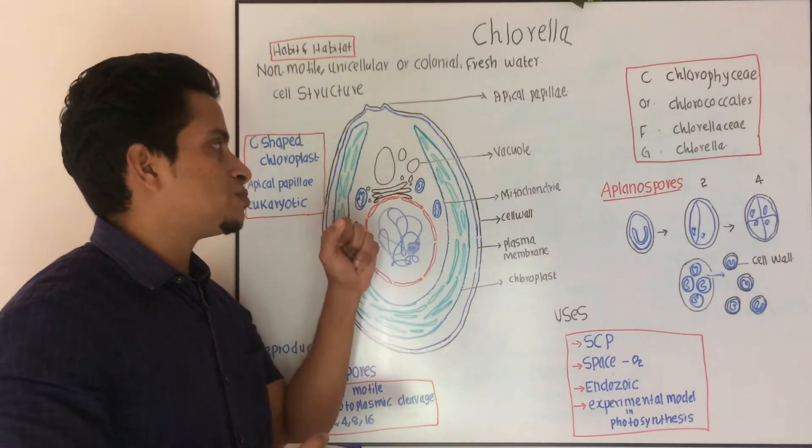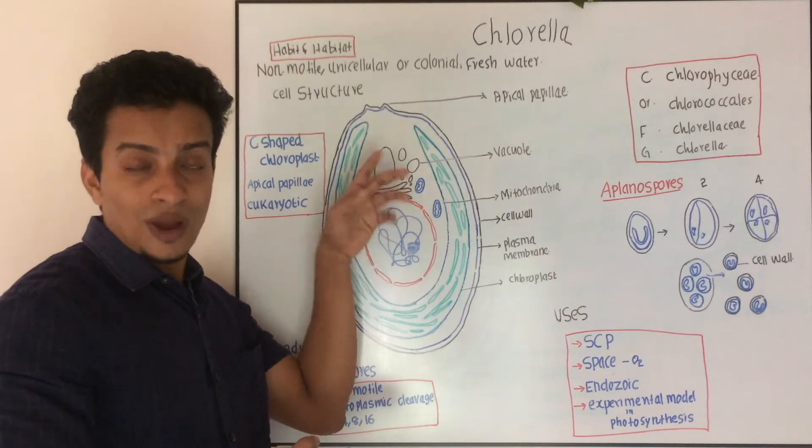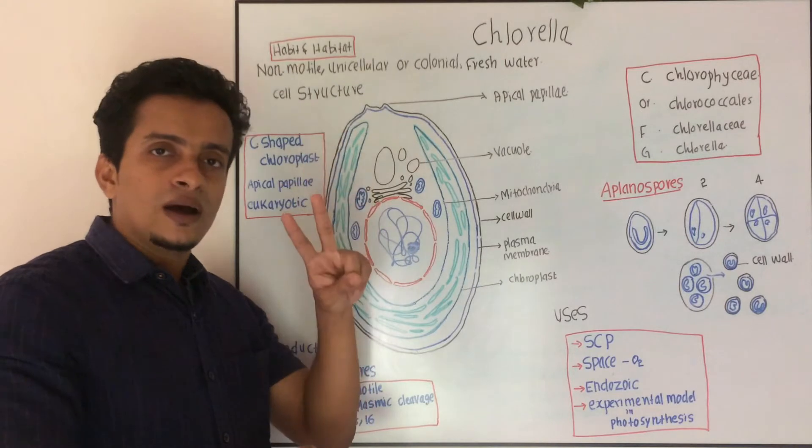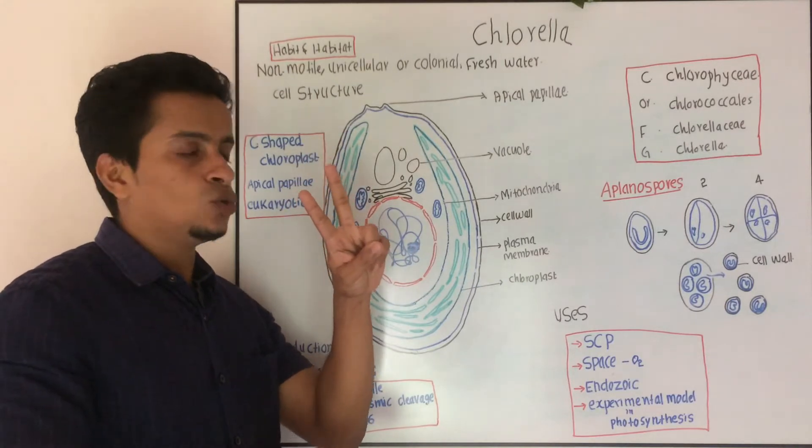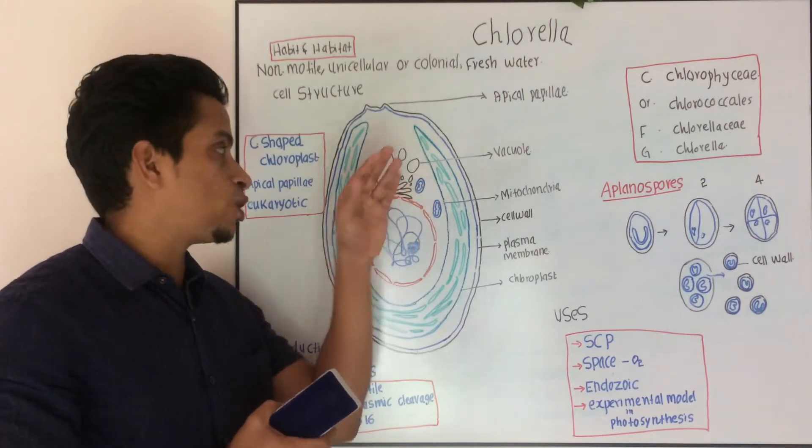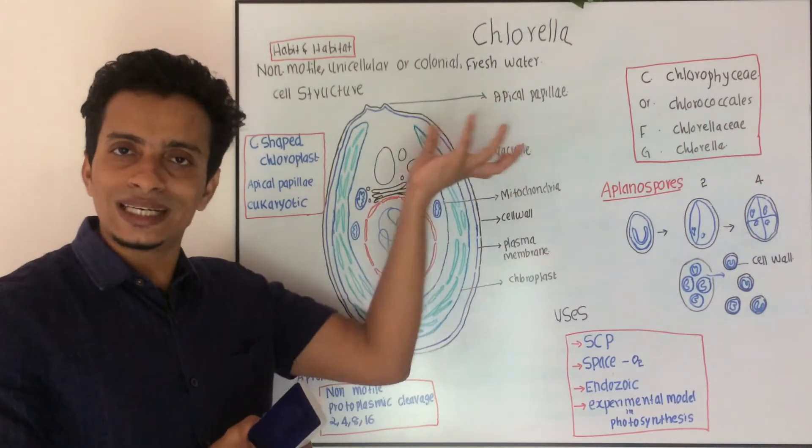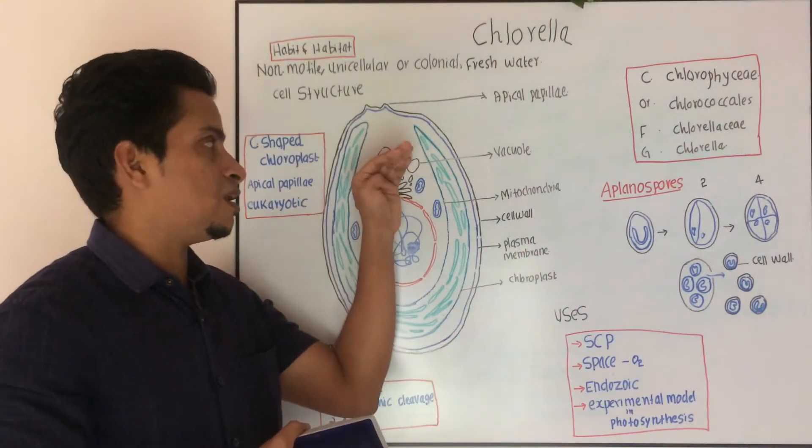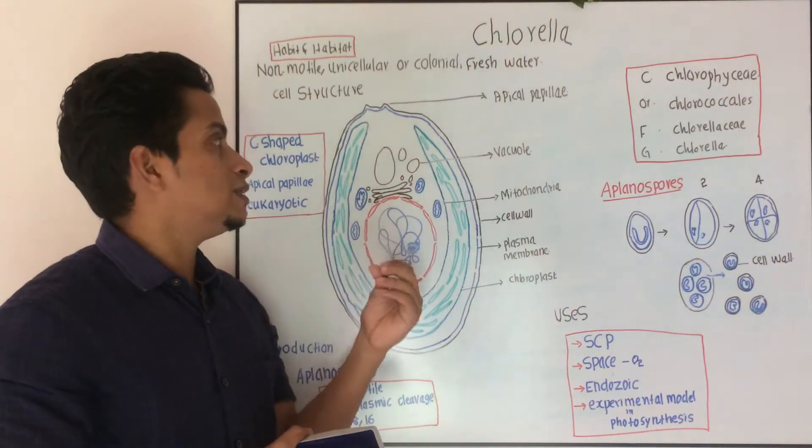Then you can see endoplasmic reticulum, vacuoles are in eukaryotes. The main cells are the plant cells and animal cells. There is a presence of vacuoles in plant cells, which is a characteristic feature of a plant cell.